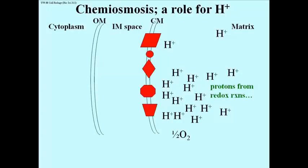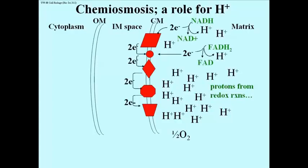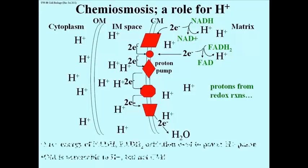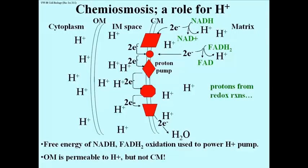This slide shows what happens when electrons flow from NADH or FADH2 to oxygen down the electron transport system. As electron carriers are oxidized and the electrons move down the electron transport chain, the free energy released powers proton pumps in the cristae membrane that pump protons into the space between the cristae membrane and the outer membrane. Some protons are shown in the cytoplasm because the outer membrane leaks protons. The bottom line is that proton pumps have used the free energy released by electron transport system redox reactions to create a gradient of protons.